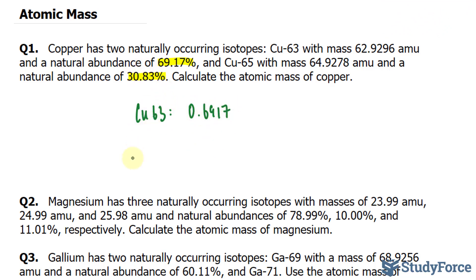Similarly, for Cu-65, this becomes 0.3083. Both of these numbers have four significant figures, so keep that in mind during the next calculation.